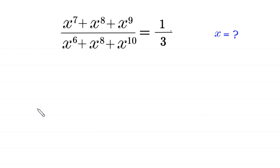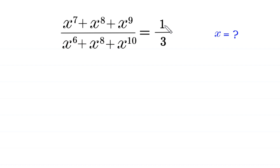Hello, welcome to Horusol, this very nice algebra equation. x to the power 7 plus x to the power 8 plus x to the power 9, divided by x to the power 6 plus x to the power 8 plus x to the power 10, is equal to 1 over 3. We need to find all possible values of x.